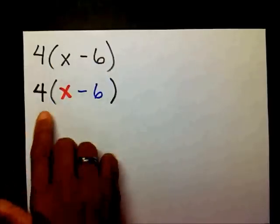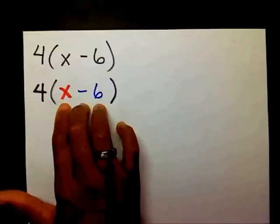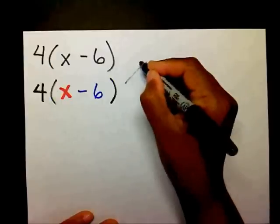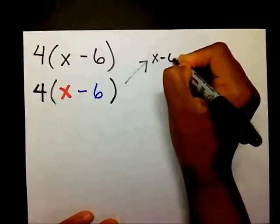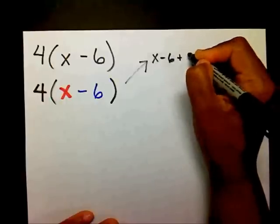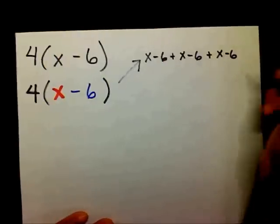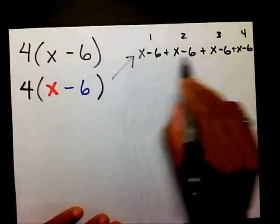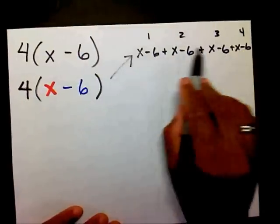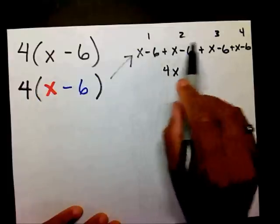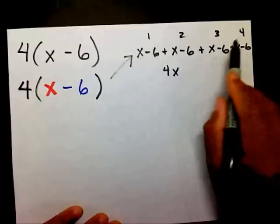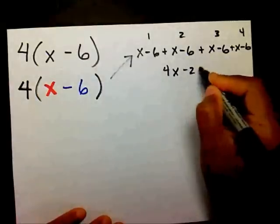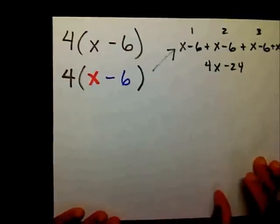What this really means is that you have four of these — four (x minus 6)'s. Let me show you what I mean: x minus 6, plus x minus 6, plus x minus 6, plus x minus 6. You have four of them. You end up with four x, and negative 6 plus negative 6 plus negative 6 plus negative 6 gives you negative 24. Instead of writing all this out, we have something called the distributive property.